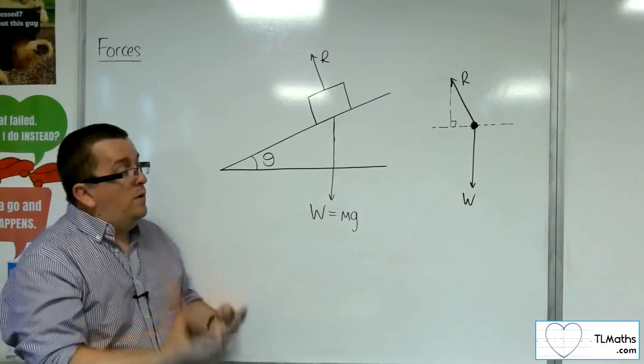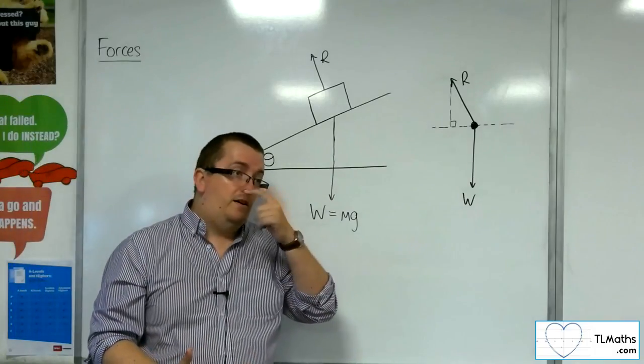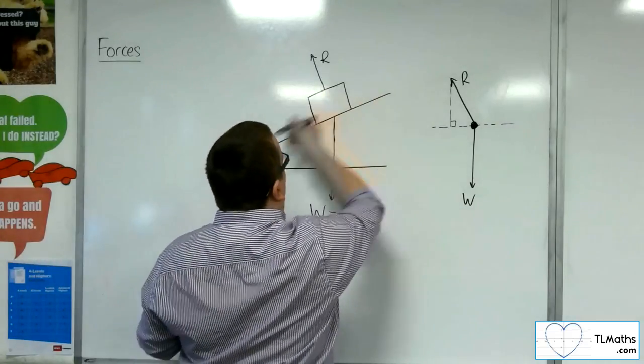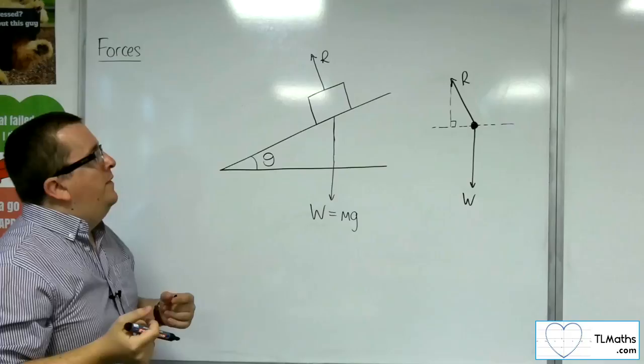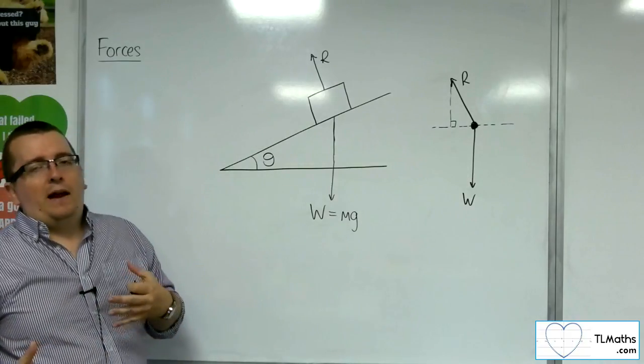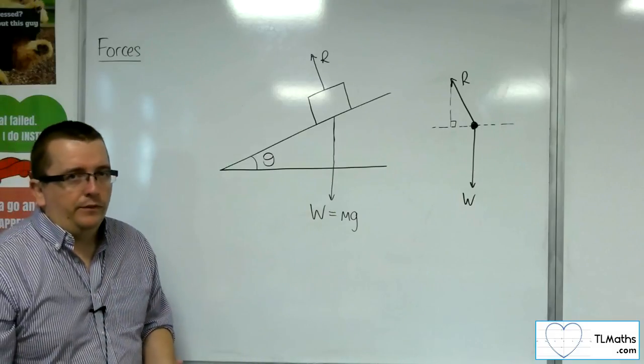Now, the problem with that in this context is that because we are often looking at motion that goes up and down the slope, that means that we're not really wanting to think about motion in horizontal and vertical components.